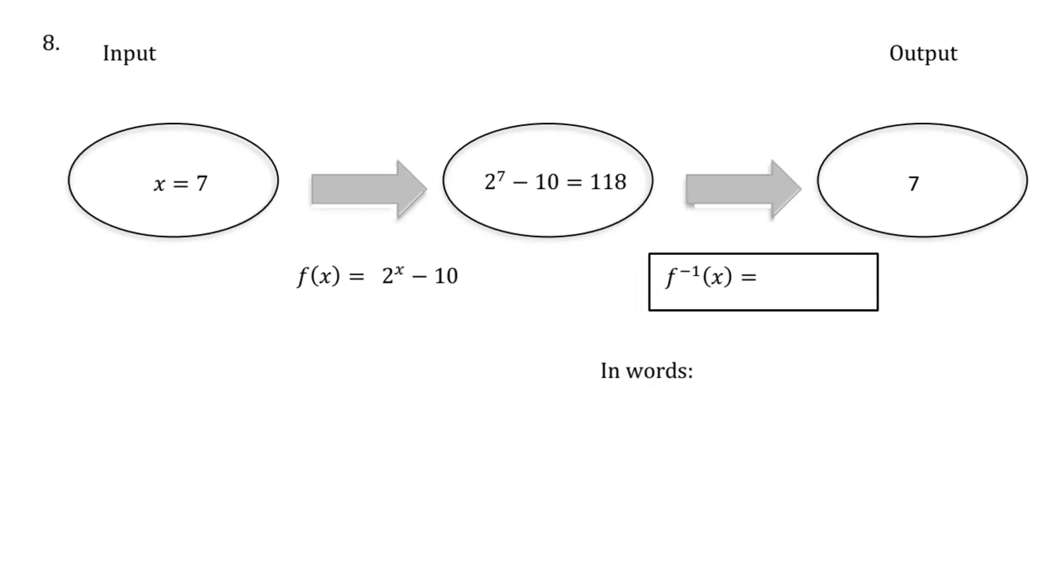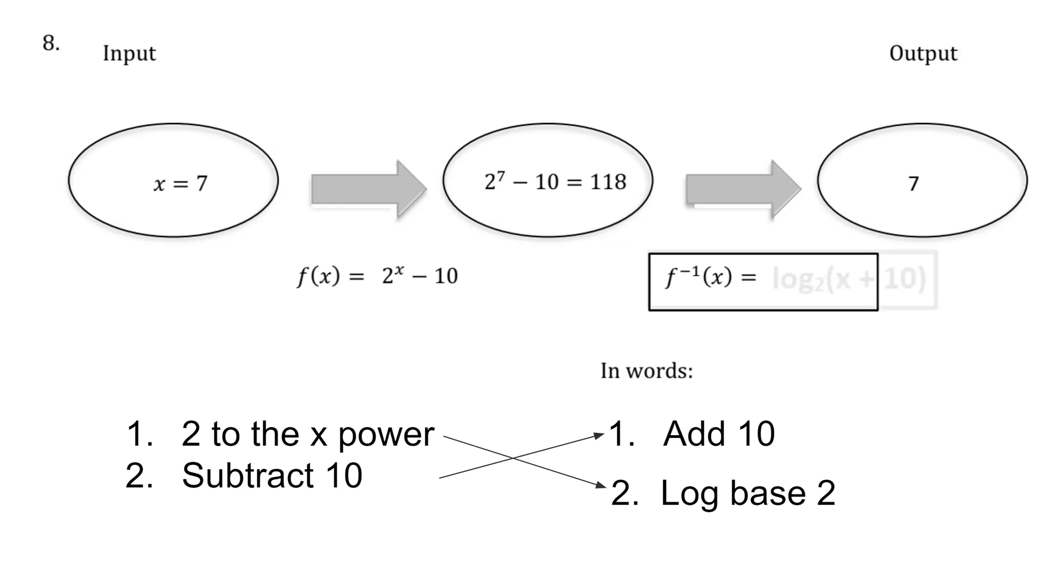Let's finish with one that involves logarithms and a two-step function. The function is 2 to the x power minus 10. First we have x in the exponent, 2 to the x power, and then 10 is subtracted. When I do opposite operations in the reverse order, the opposite of subtracting 10 is adding 10, and the opposite of 2 to the x power is log base 2. What that will look like is, in parentheses, (x + 10) to indicate that happens first, and then log base 2 outside of that.